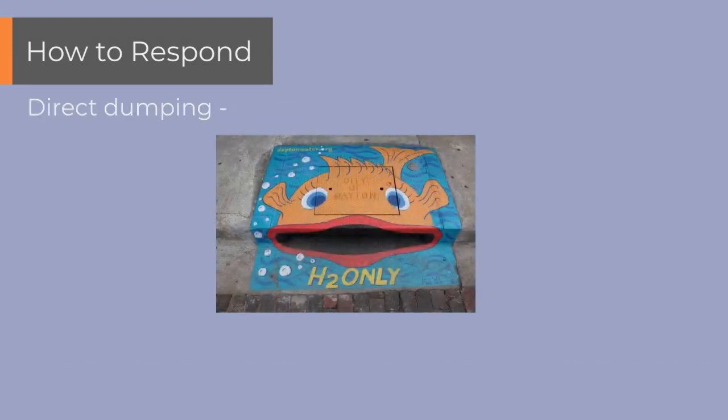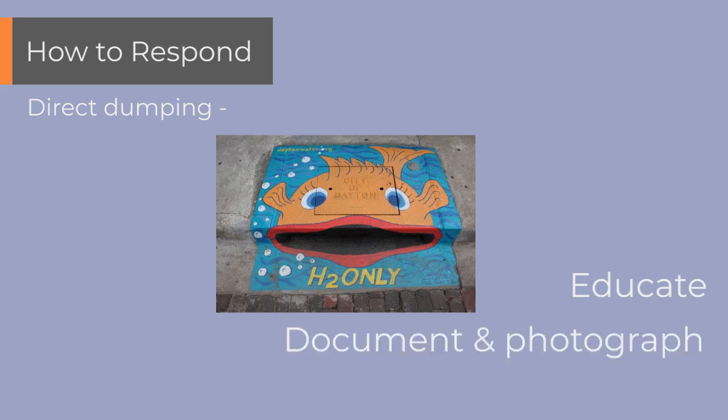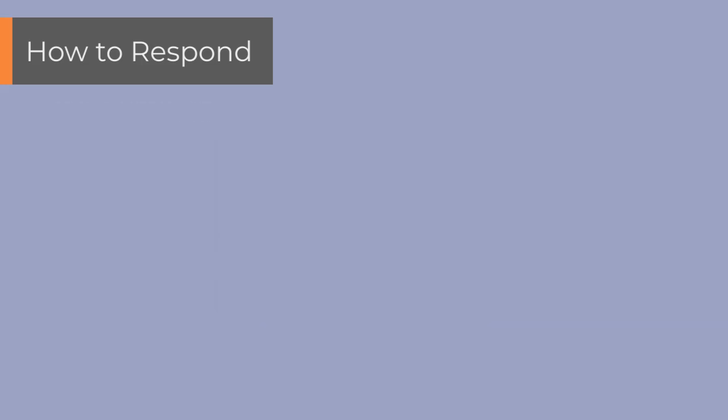If you see someone dumping directly into a storm drain, ditch, or body of water, stop and tell them what they're doing is wrong and why. Explain that storm water goes directly into streams and lakes without being treated and is a hazard to humans, the environment, and wildlife. You should document and take photos of any illegal dumping, then report it to your supervisor or the city MS4 coordinator.